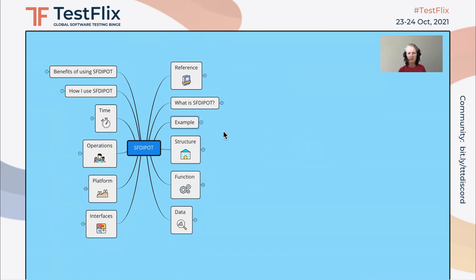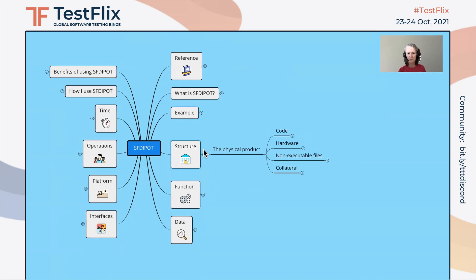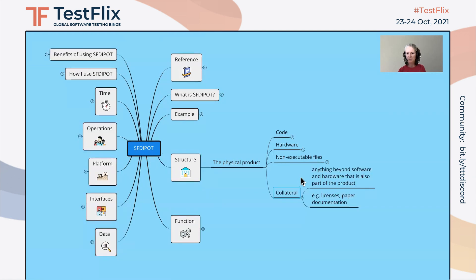So to use San Francisco Depot, you look at each of the aspects in turn and see what's relevant for you. So for structure, this is the physical product. Each of the aspects are divided into subcategories. So here for structure, it's code, hardware, non-executable files, and collaterals. So you want to look at each of these in turn and see if it's relevant for this feature.